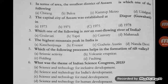The fifth question: which of the following processes helps in the formation of Rift Valley? Options are seismic activity, volcanic eruption, folding, and faulting. A Rift Valley is a linear-shaped lowland between several highlands or mountain ranges created by the action of a geologic rift or fault. A fault is a fracture in rock where there has been movement and displacement.